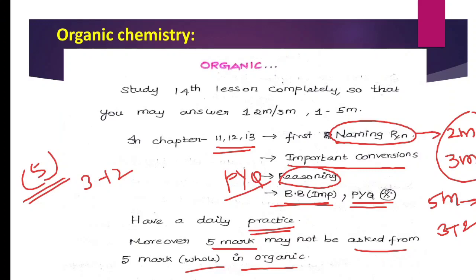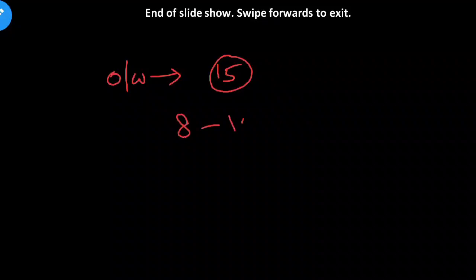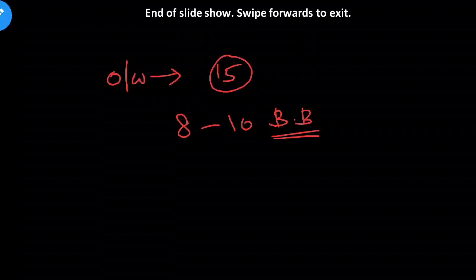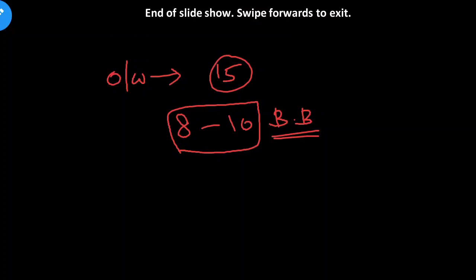Coming back to one-words: there are 15 one-words total. In the 15 one-words, 8 to 10 one-words may be from book pack. 8 one-words minimum guaranteed. It may differ, but 8 to 10 or sometimes 5 from Inorganic, 5 from Physical, 5 from Organic. 15 out of 15 is free.